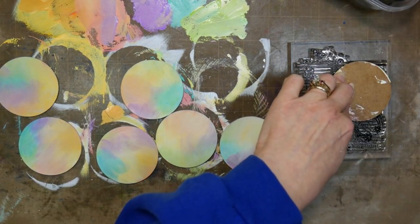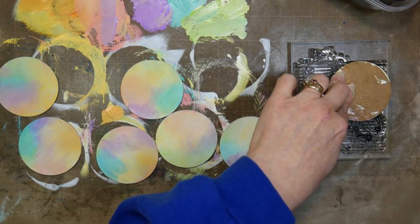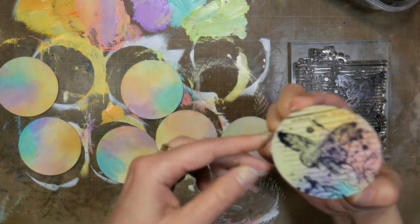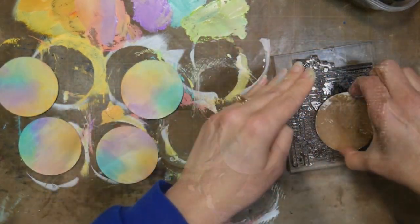The nice thing about polymer stamps versus rubber stamps is that they give a little more squish, so if you're on an unconventional surface it does seem to marry really well and give you a beautiful impression.